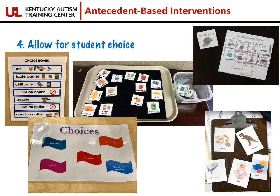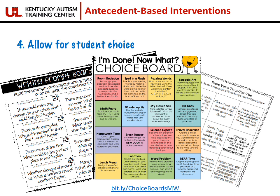Some choice boards have a 'not an option' label that can be placed over items — whether an iPad battery is dead or something another student is using at that time. You can have choices for snack, for toys during free play, or for sensory items they'd like to use. There are also plenty of ways to incorporate choice boards and student choice into academic concepts. There's a link on this slide that will take you to a Google folder with lots of different academic choice boards.